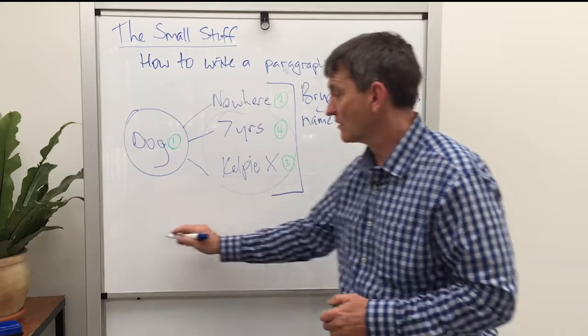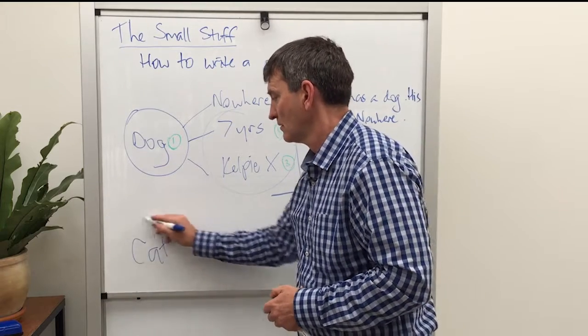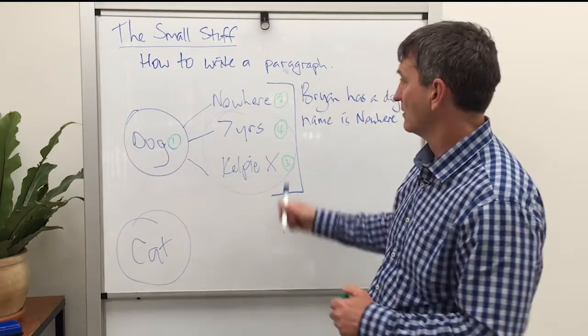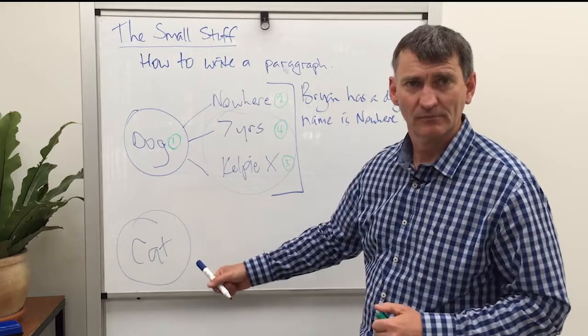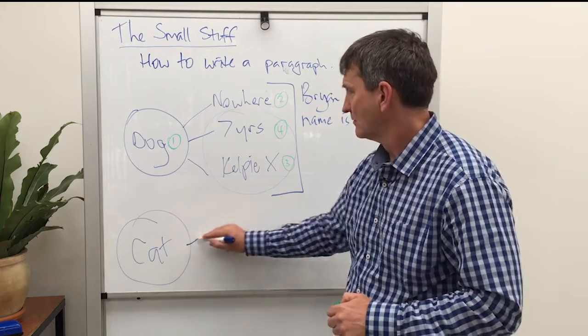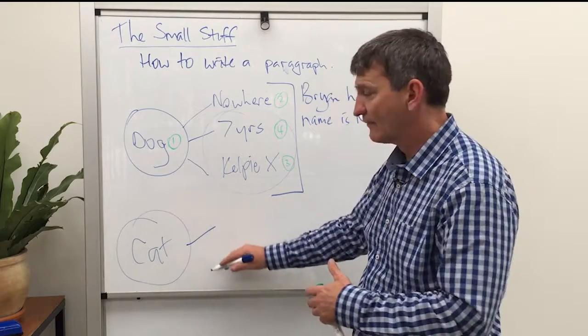We could extend this about all sorts of pets. Sally has a cat. Sally's cat's name is or whatever it is.